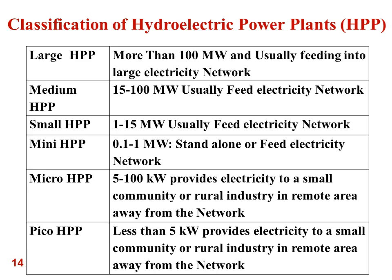Micro hydropower plants have a power output from 5 to 100 kilowatts and usually provide electricity to small communities or rural industries in remote areas away from the electricity network. Very small hydropower plants — less than 5 kilowatts — are also stand-alone systems covering the electricity needs of the community around them.